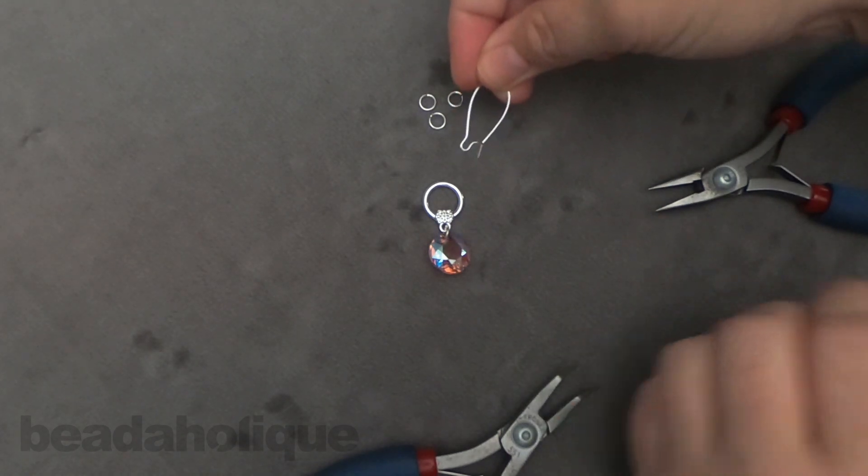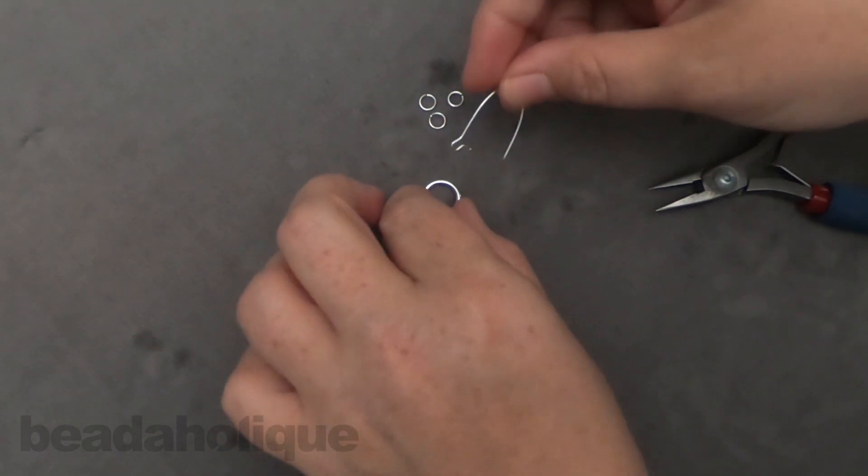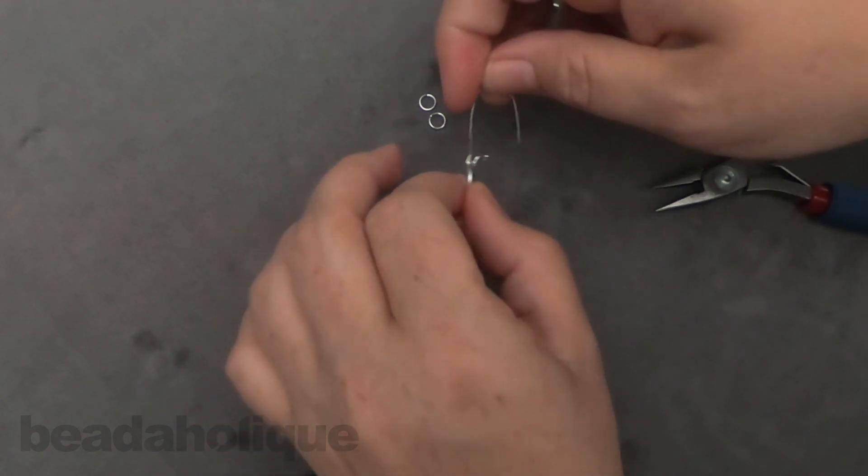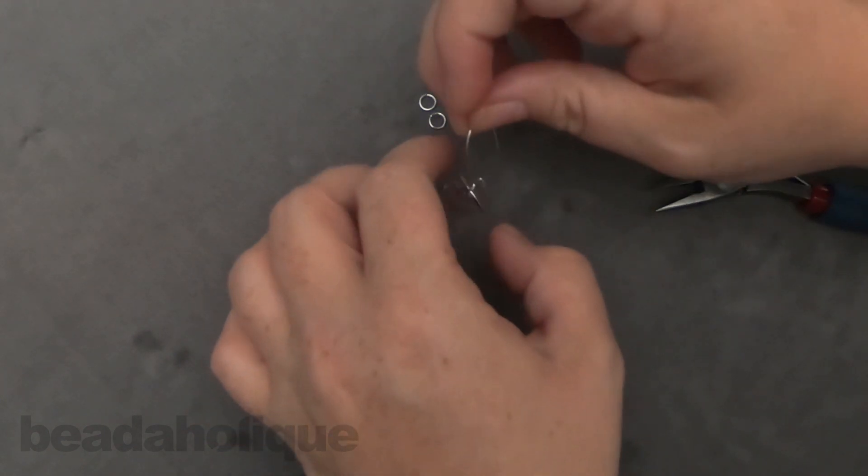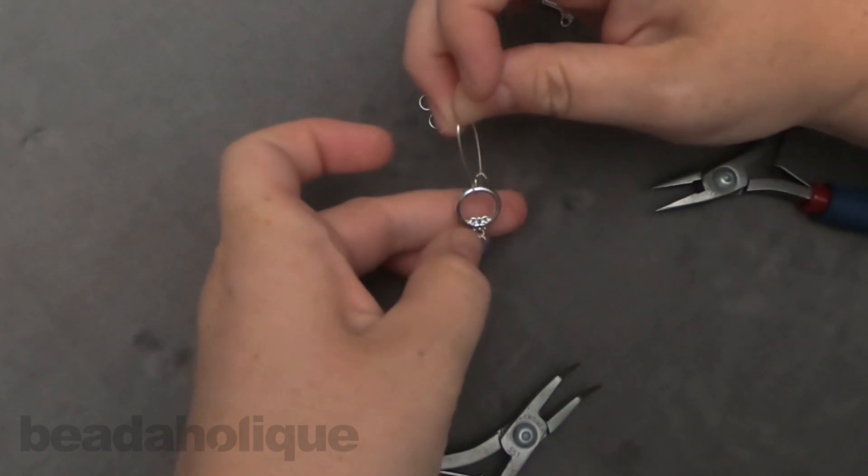I also have this really cool kidney wire hook and what I'm going to do is just slide that right on there. It fits perfectly into that little notch there so when you close that up you have a great little pair of earrings.